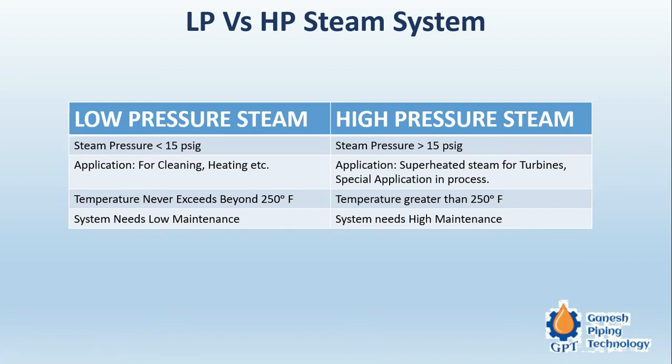On the left-hand side we have low pressure steam and on the right-hand side high pressure steam. Basically, any steam system having a pressure less than 15 psig — that is one bar, equal to one normal atmosphere — is called low pressure steam. Any system with a pressure greater than 15 psig, that is greater than atmospheric pressure, is called high pressure steam.